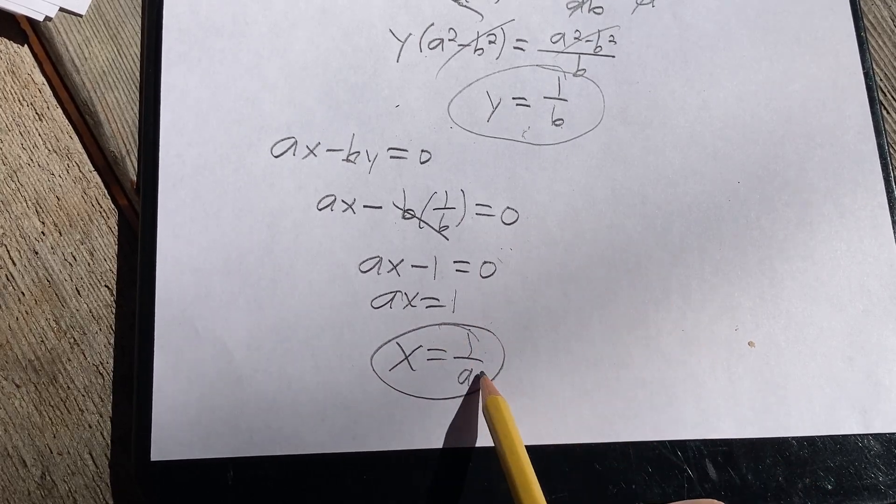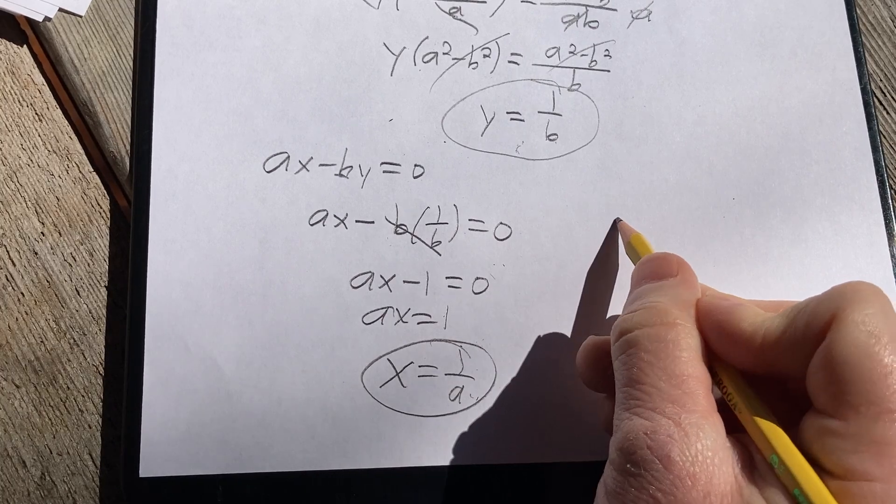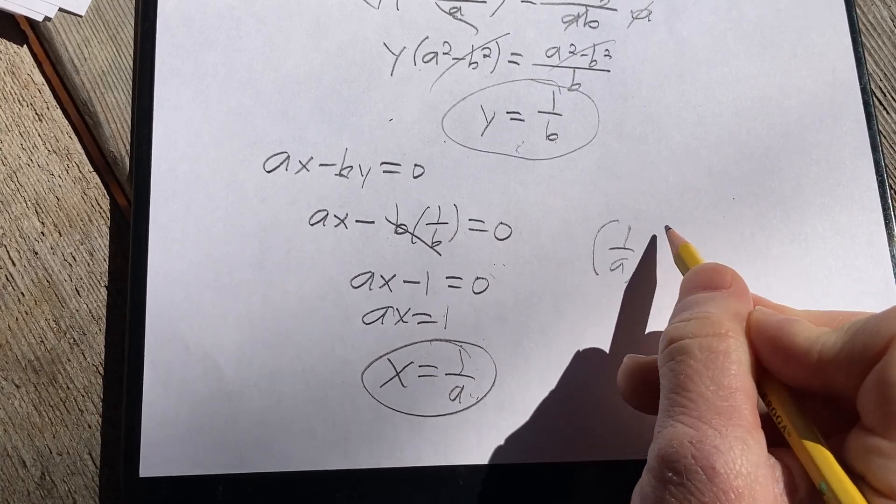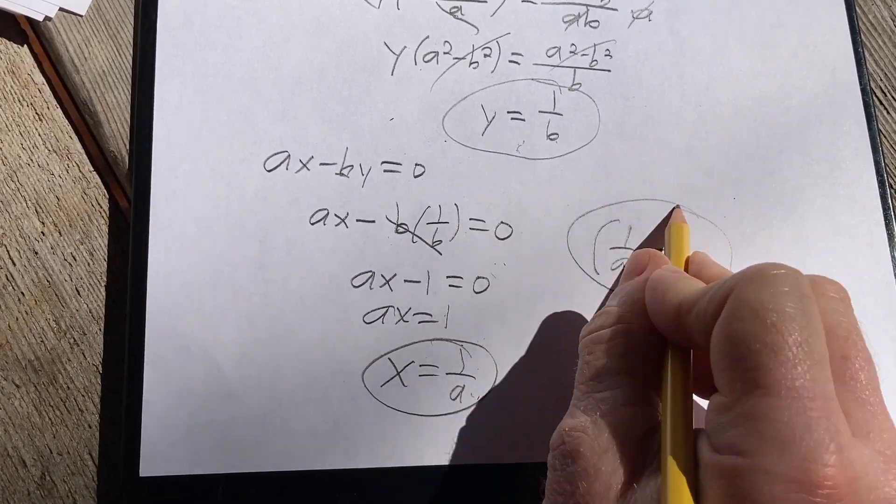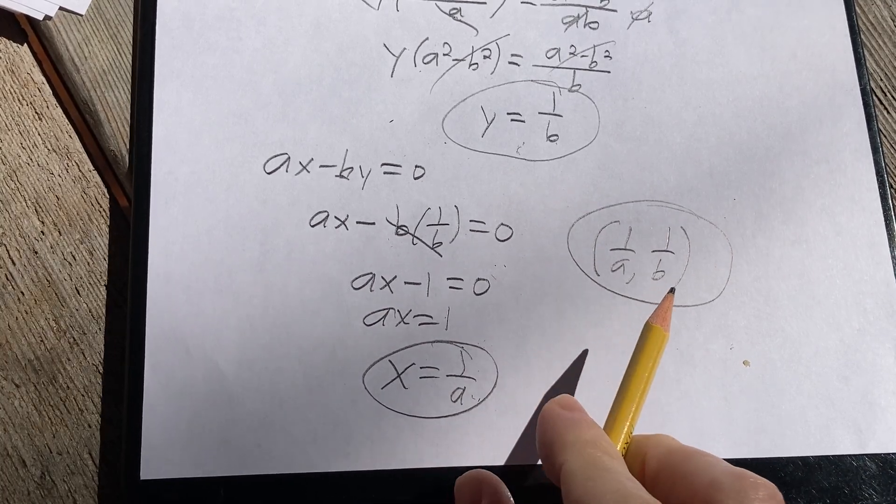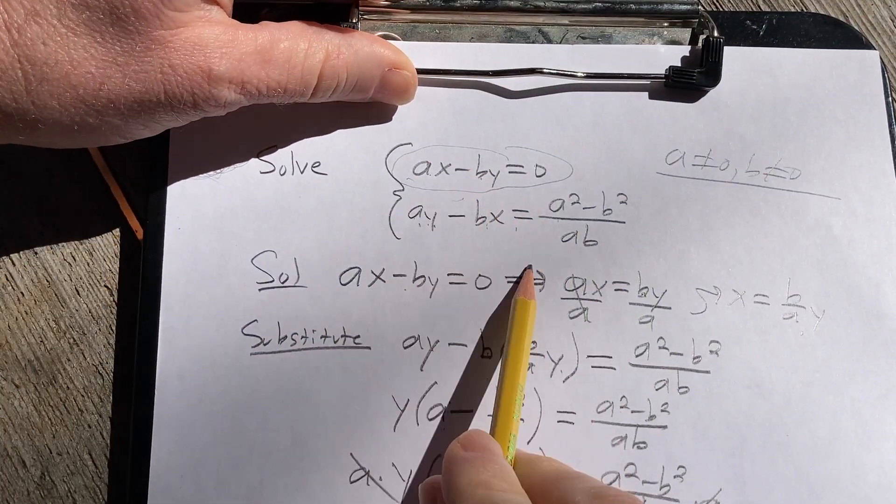So we have our answers: x equals one over a and y equals one over b. You can write it as an ordered pair if you like. And that would be the answer as an ordered pair. Basically, this is the point of intersection